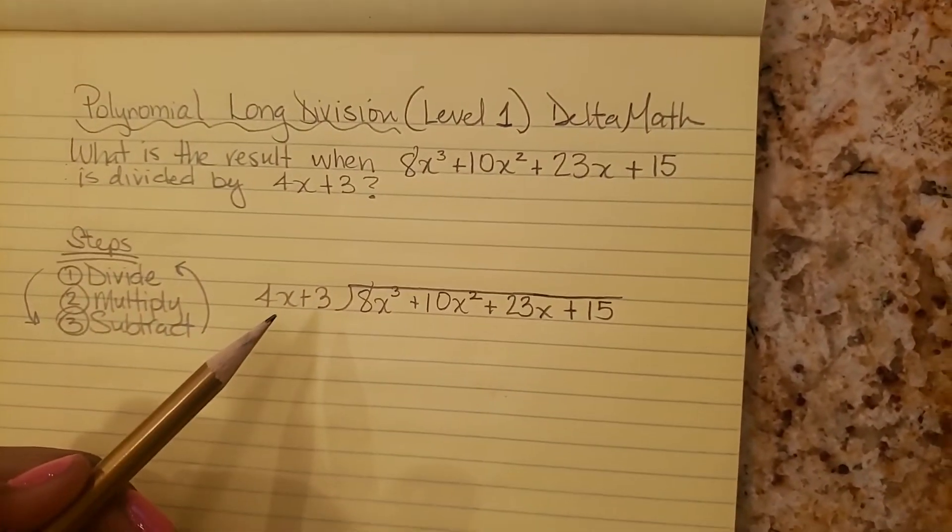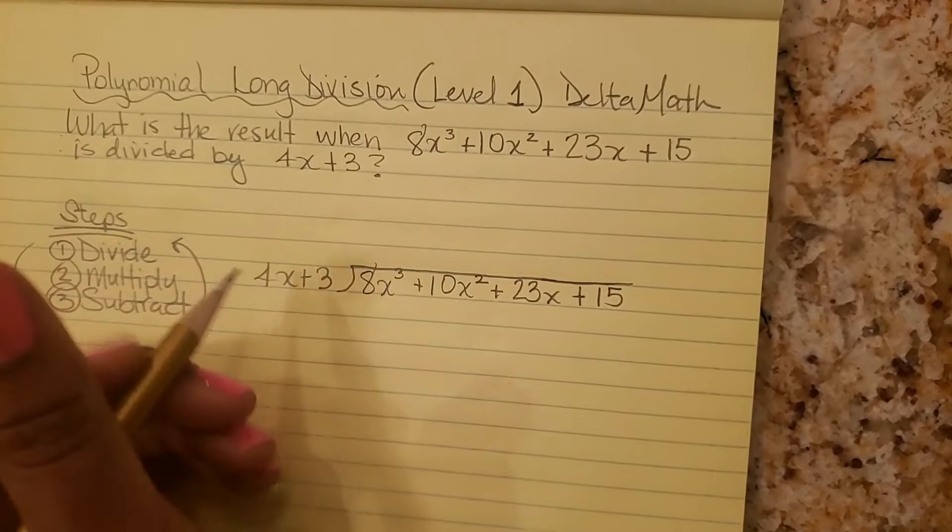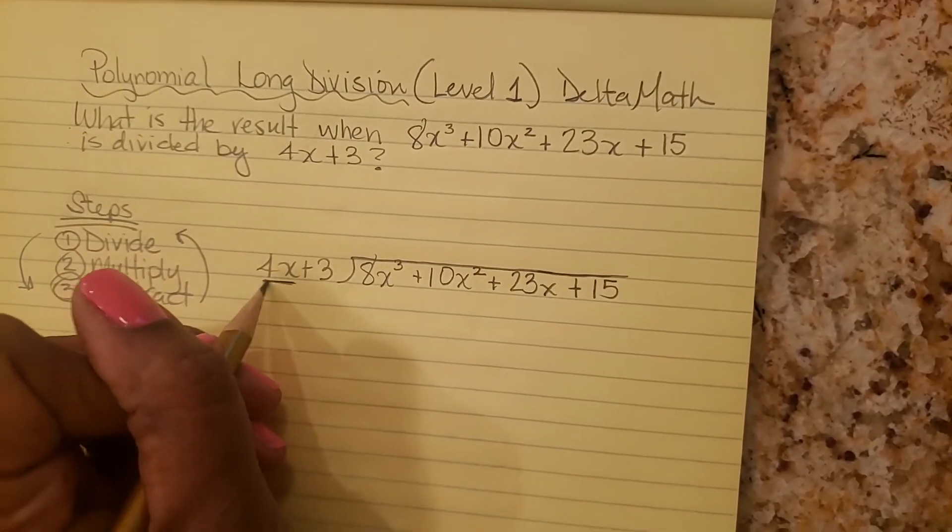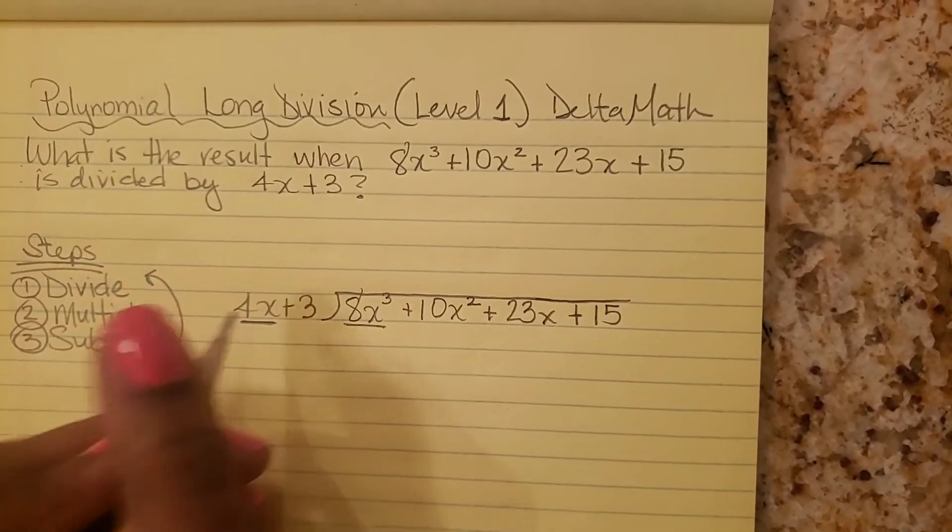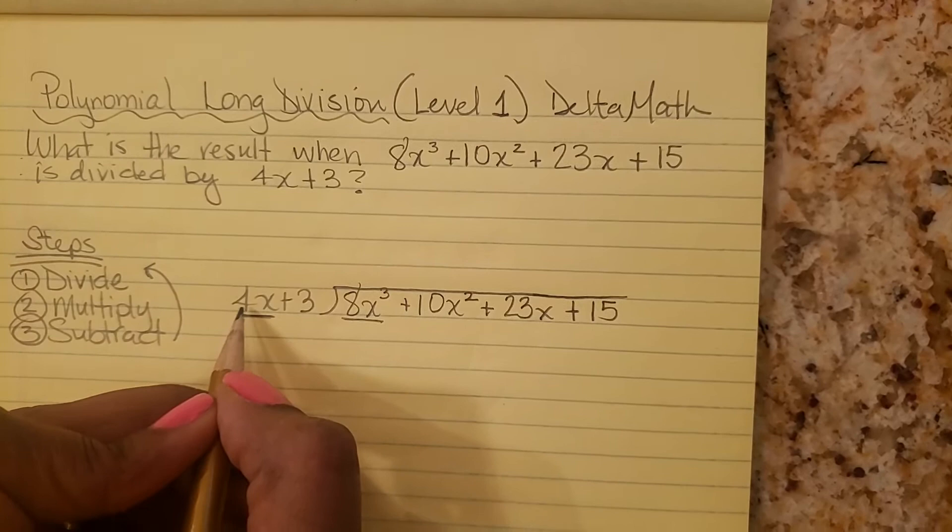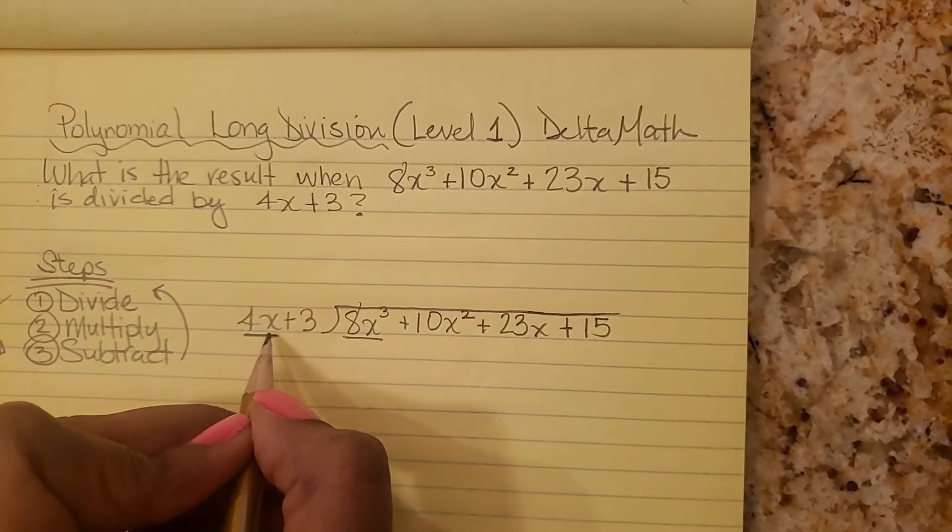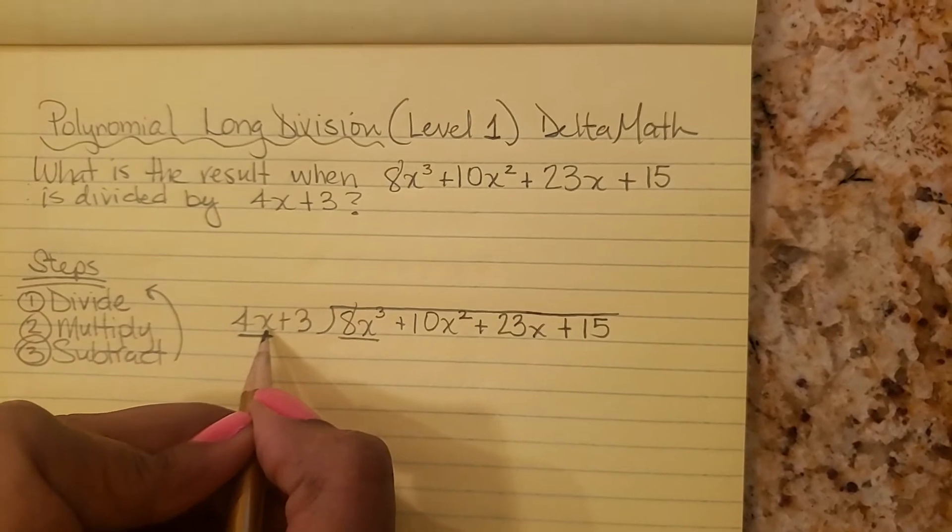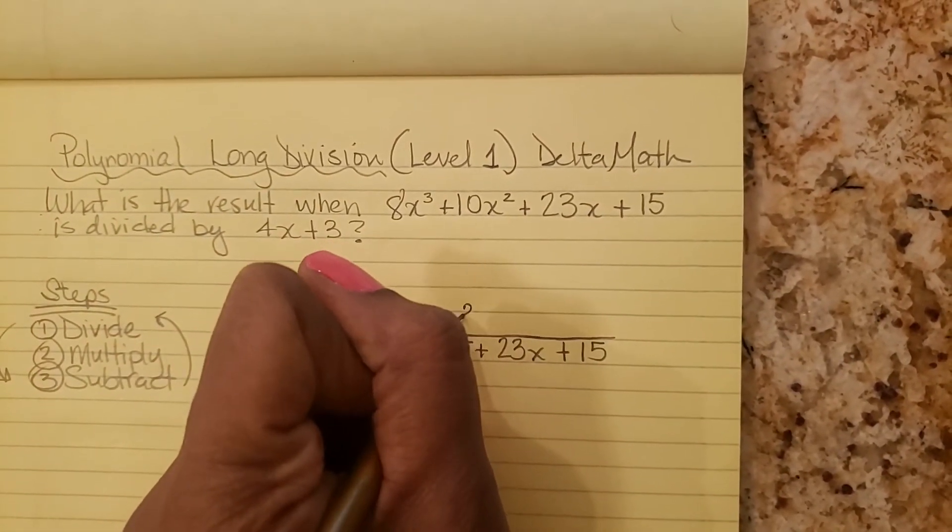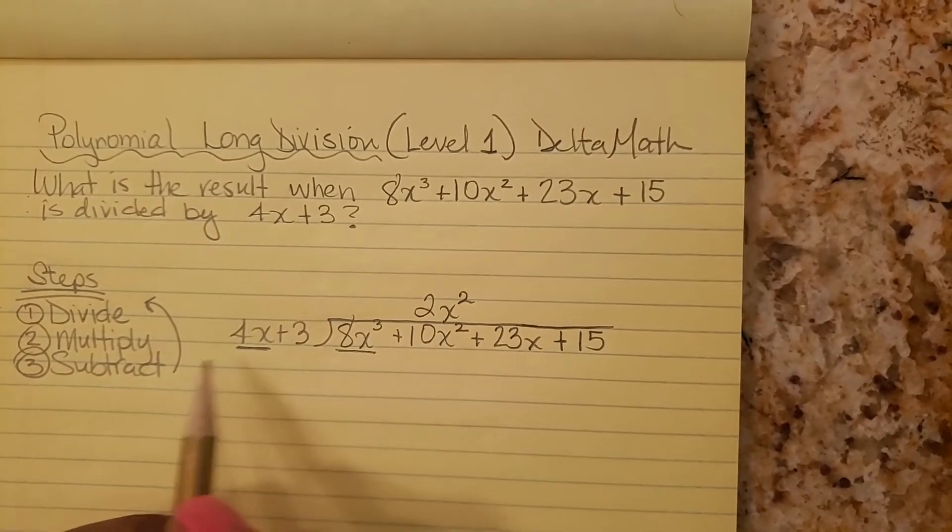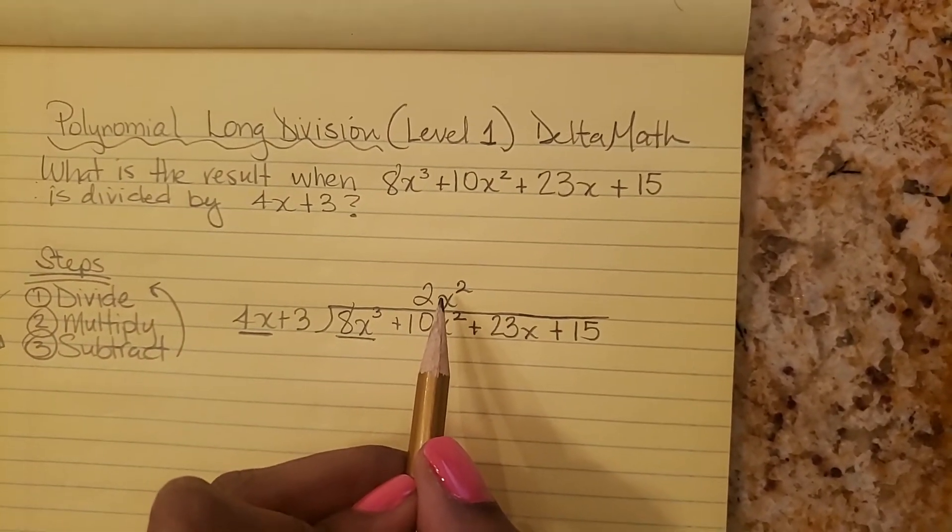So we're going to do 4x plus 3 into this whole polynomial. First we're just going to focus on 4x into 8x cubed. Another way to think of it is 4x times what will give me 8x cubed? Well, 4 times 2 is 8 and x times x squared is x to the third. So it's going to be 2x squared. 4x times 2x squared will give me 8x cubed. I like to write the like terms above each other. And anytime you do this first step, this division, you write your quotient up here.